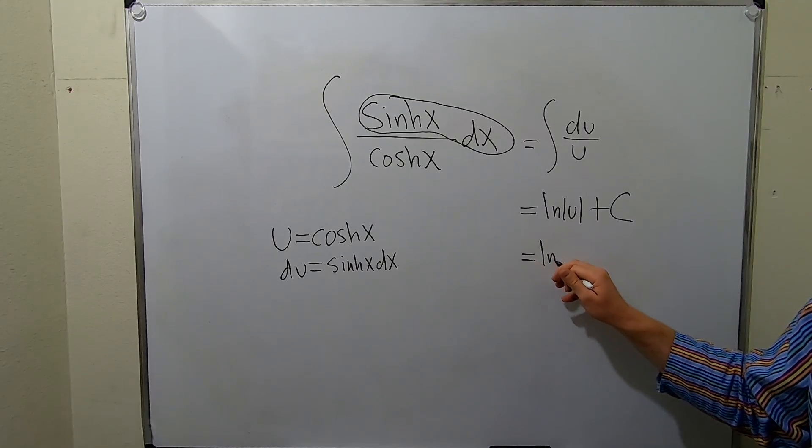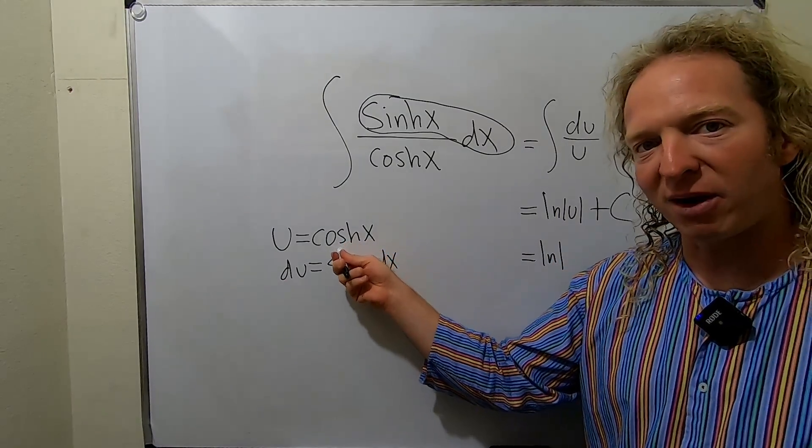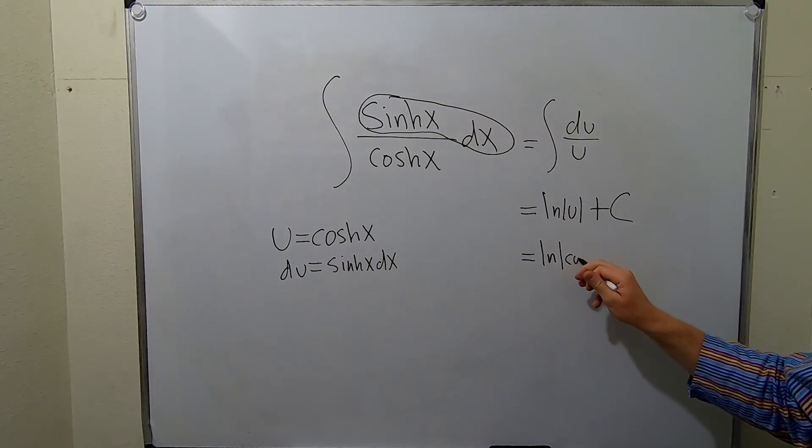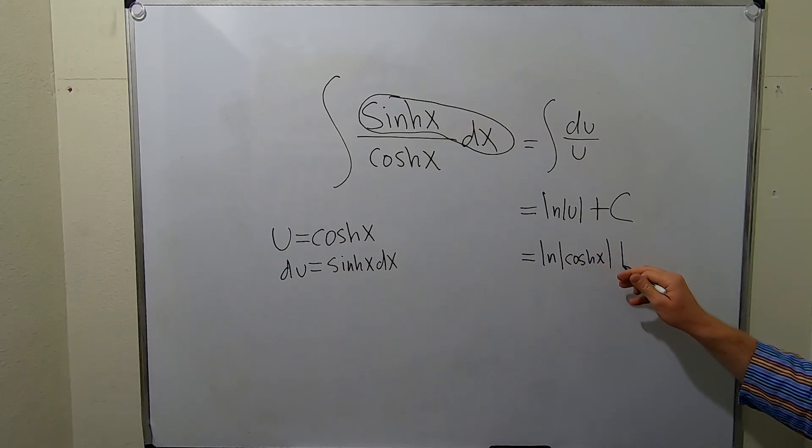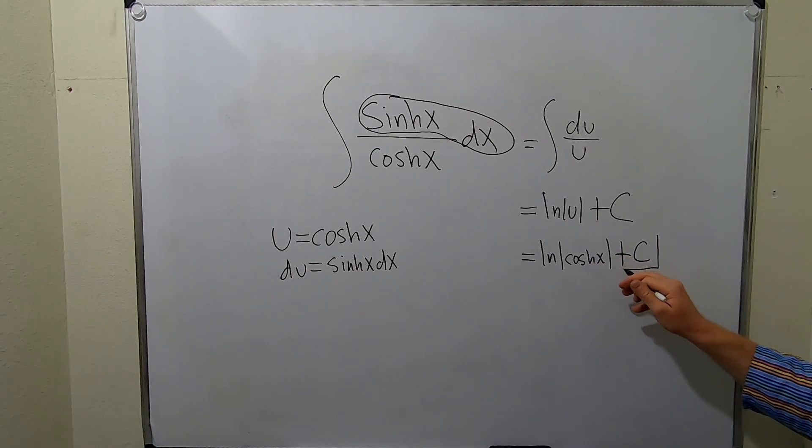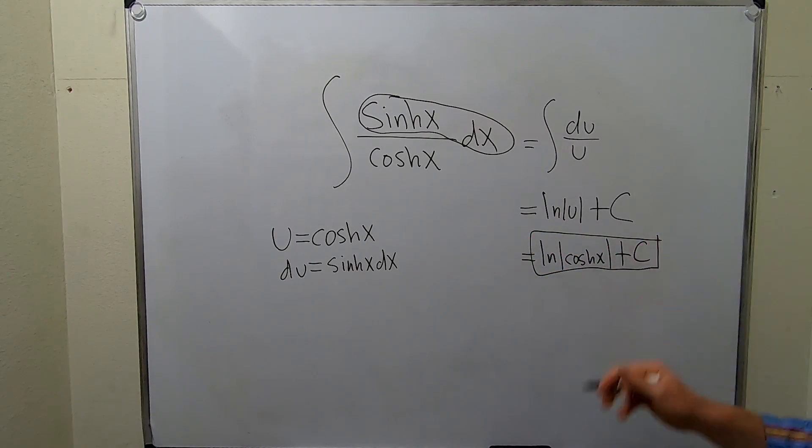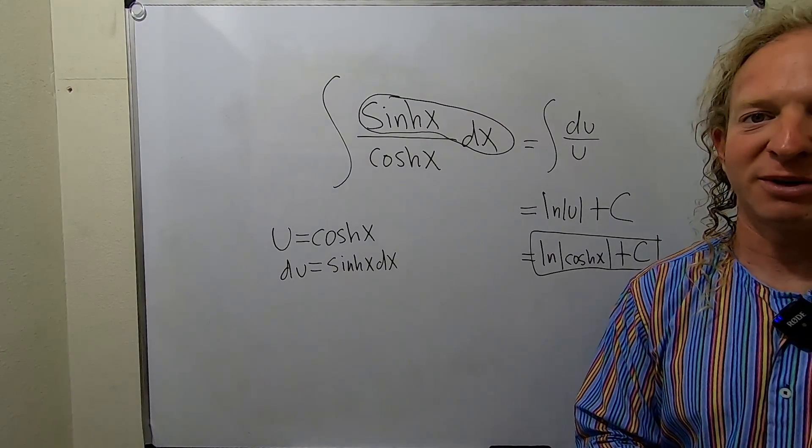The very last thing to do is replace u with the hyperbolic cosine of x. So we have cosh x. And let's not forget our capital C. And that, my friends, is the final answer. I hope this video has been helpful. Take care.